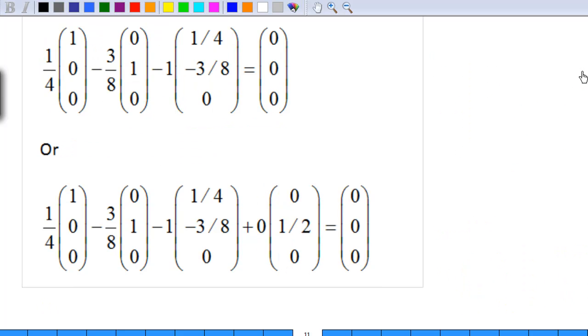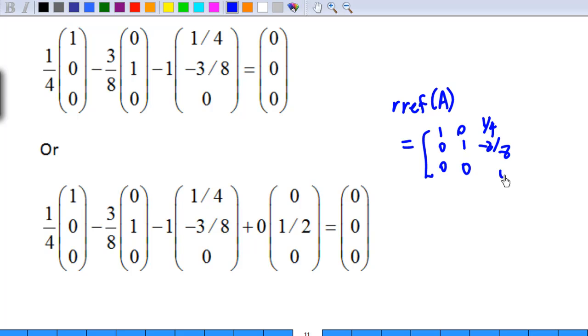Or as we recall that the RREF of A consists of 4 columns, which is 1 0 0, 0 1 0, 1 quarter minus 3 over 8 0, and 0 half 0. So, that is why I can add an extra fourth column, which is 0 half 0, and the equation will become 1 quarter times 1 0 0, minus 3 over 8 times 0 1 0, minus 1 times 1 quarter minus 3 over 8 0, plus 0 times 0 half 0, equal to the zero vector.